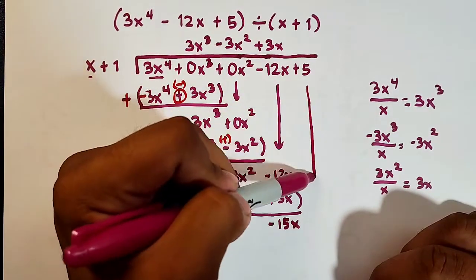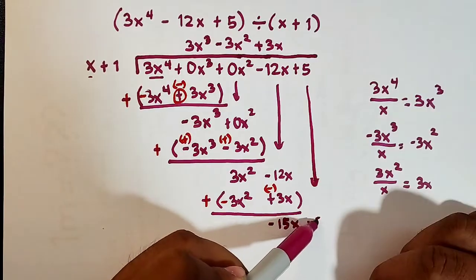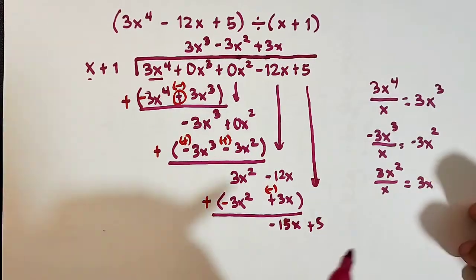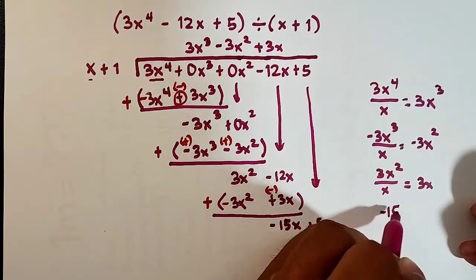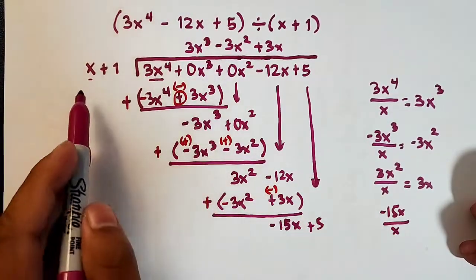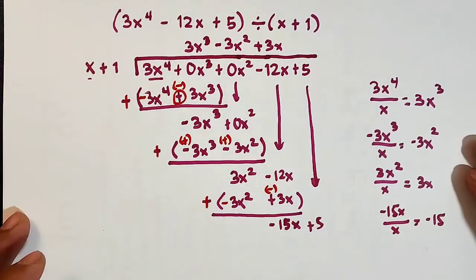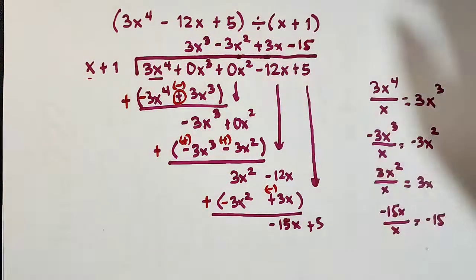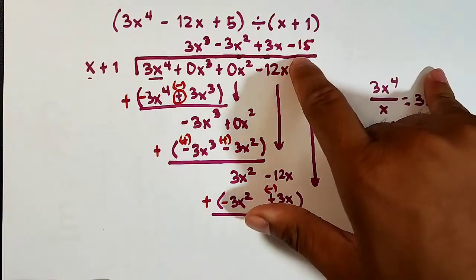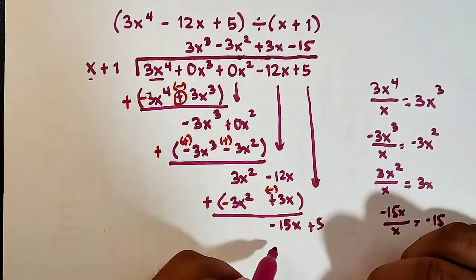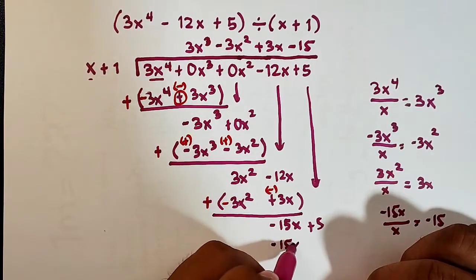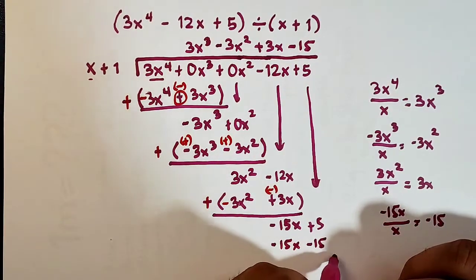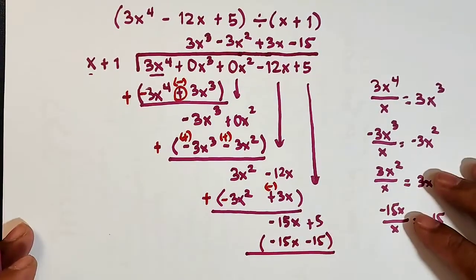The new leading term is negative 15x divided by x, which equals negative 15. We put that up here as minus 15. Remember: divide, multiply, subtract. Negative 15 times x is negative 15x; negative 15 times 1 is minus 15. Then subtract and enclose it in parentheses.